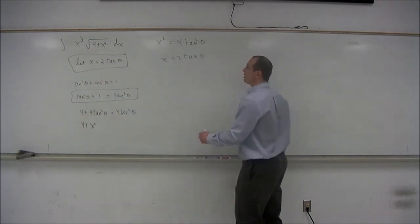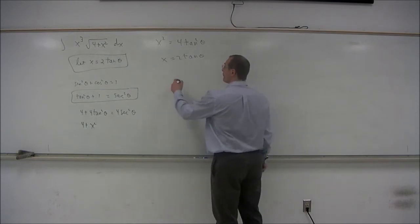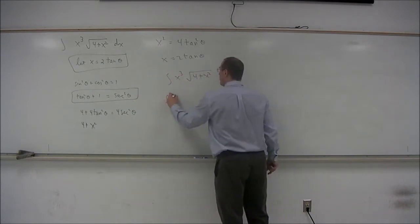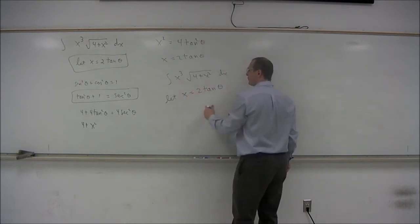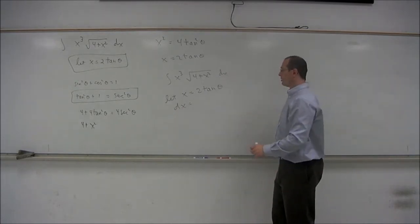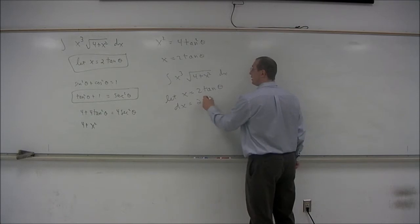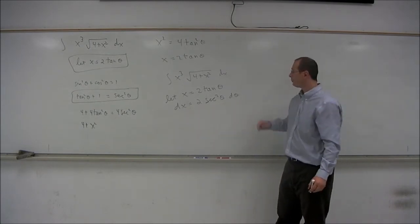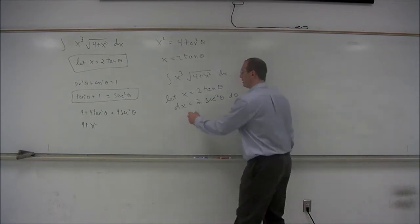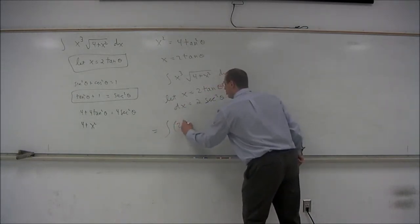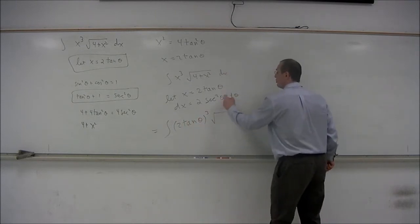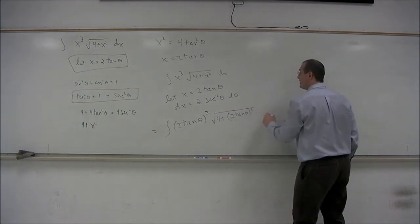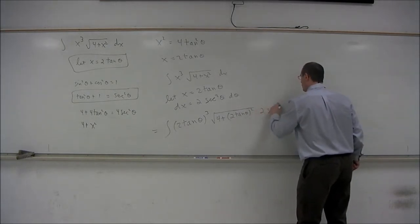So let's look at what happens when we use this substitution. The original integral — x cubed times the square root of 4 plus x squared dx — we let x equal 2 times the tangent of theta. We need to figure out what dx will equal as well. The differential of tangent is secant squared theta, so dx equals 2 secant squared theta d theta.